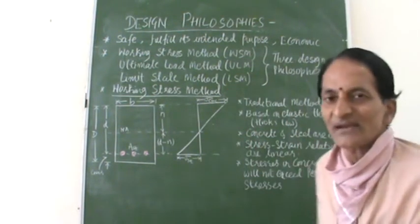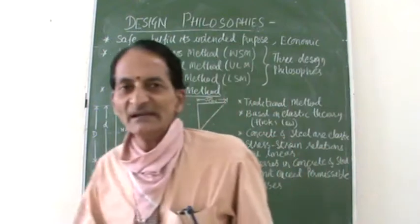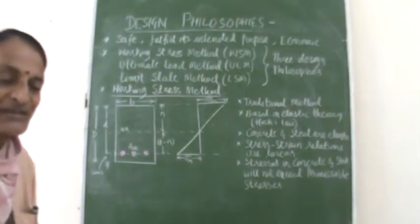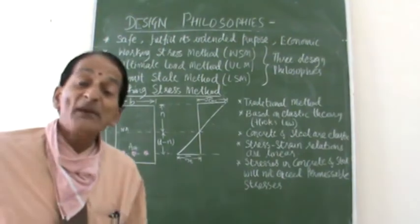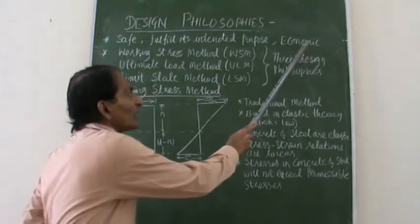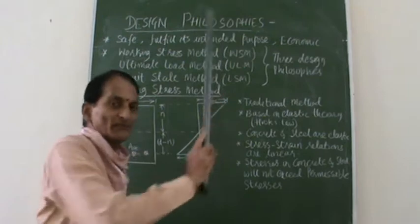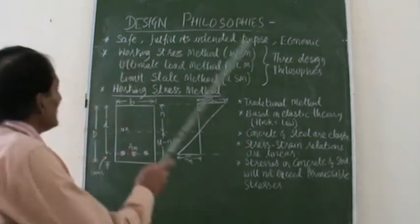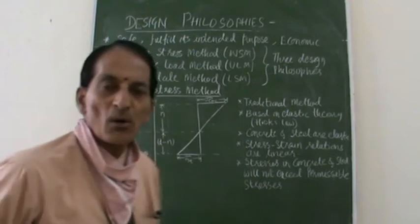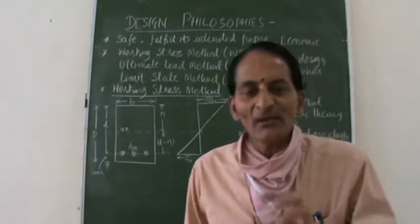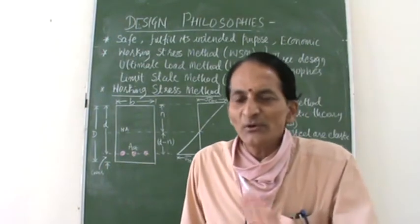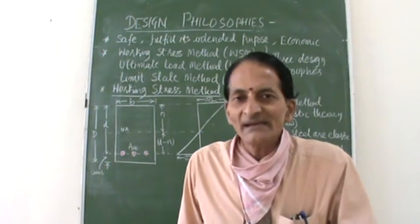The last characteristic is it should be economical. I should not spend a lot of money on it; it should be as economic as possible. So if your design incorporates all these things — safety, purpose, and economy — then only I will call it a scientific design. Otherwise we don't call it a design.